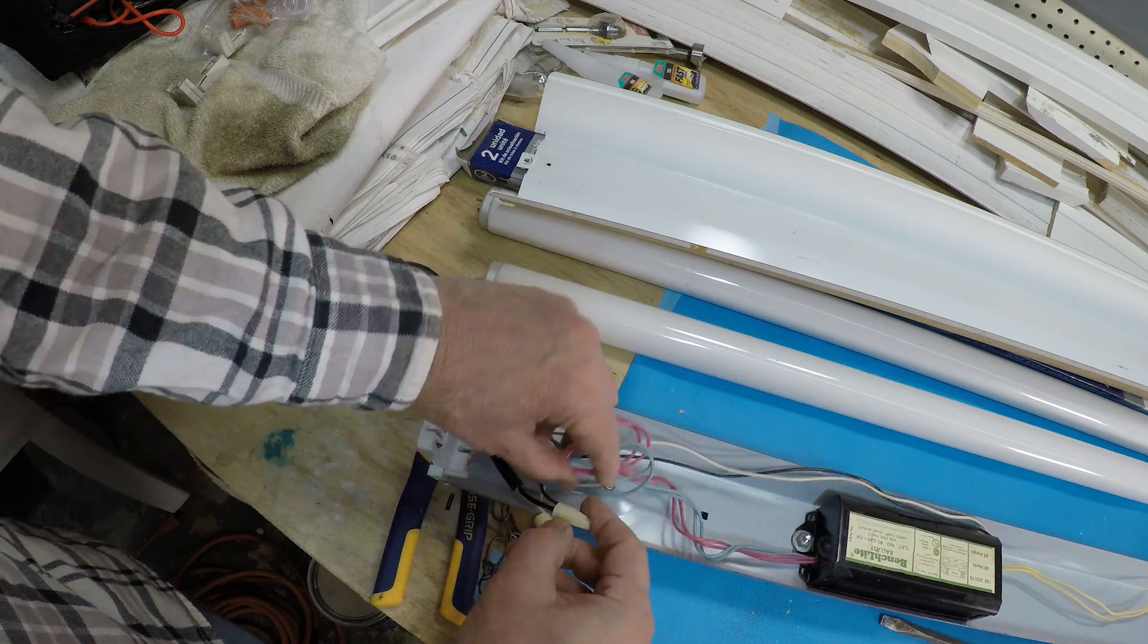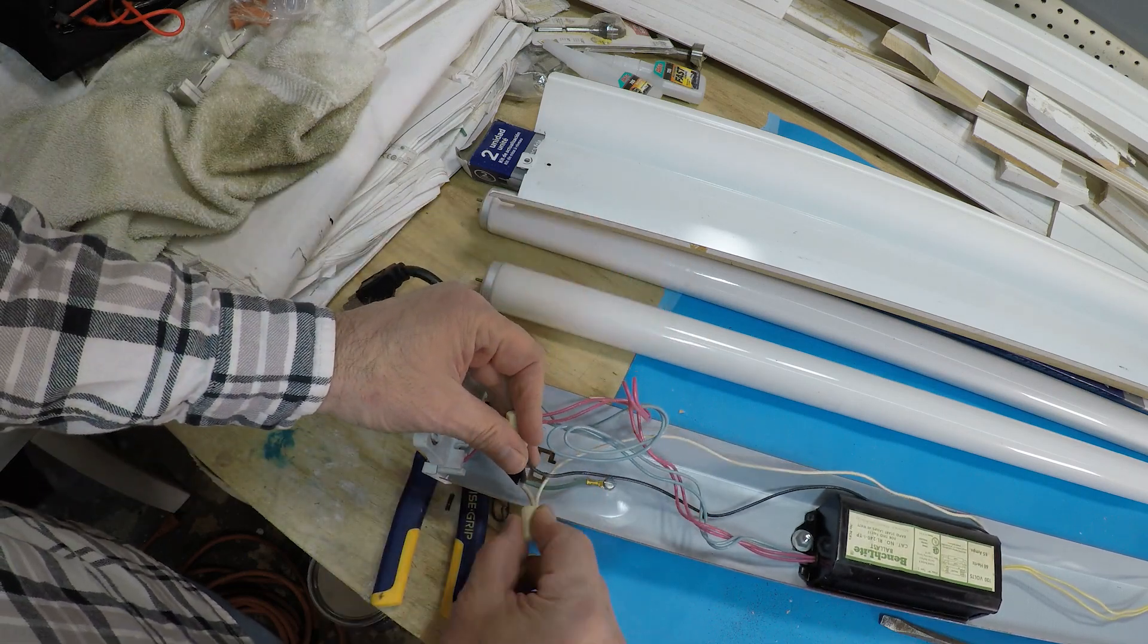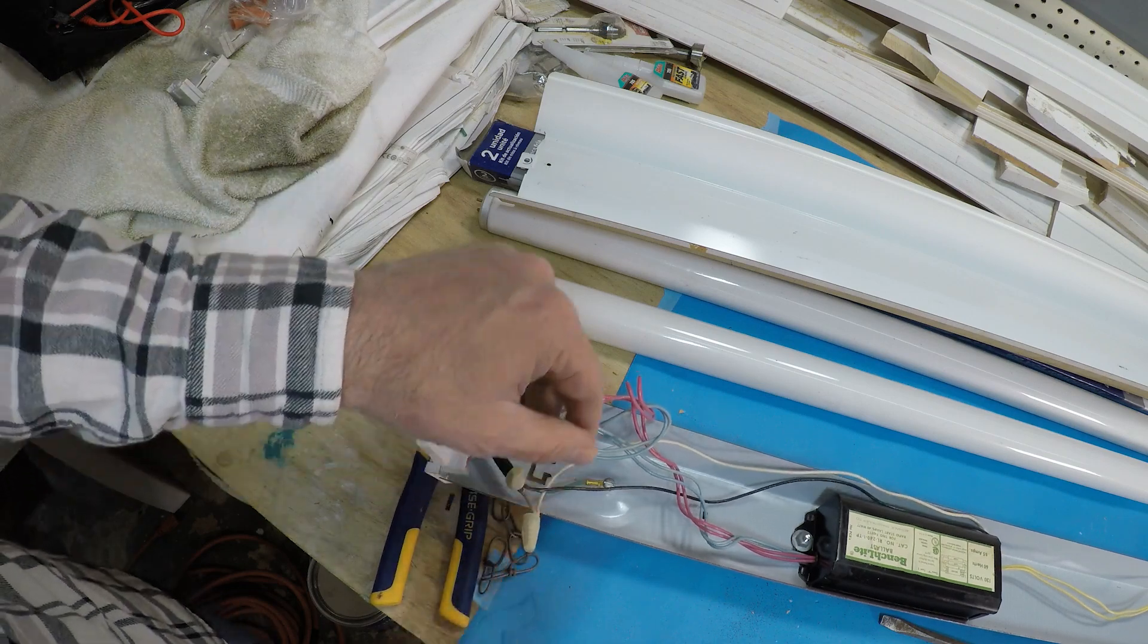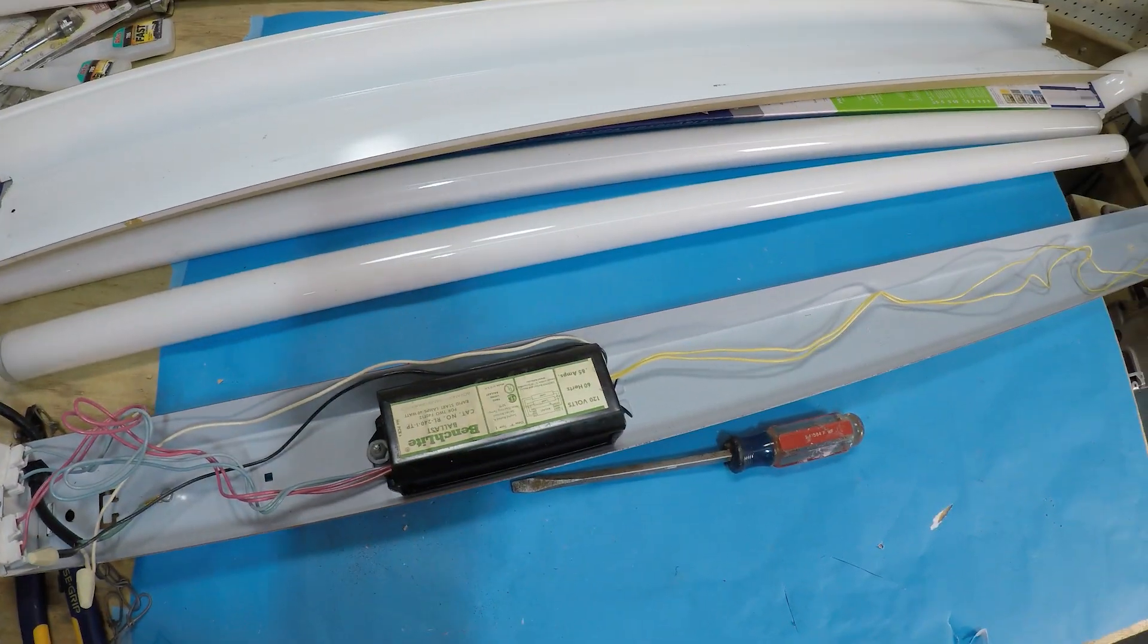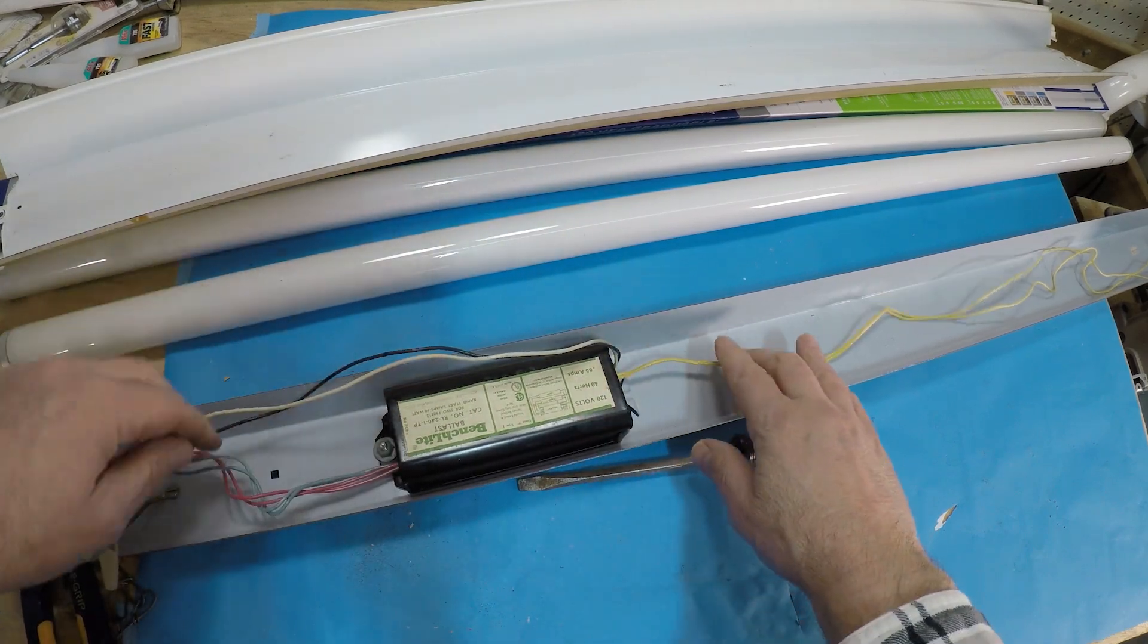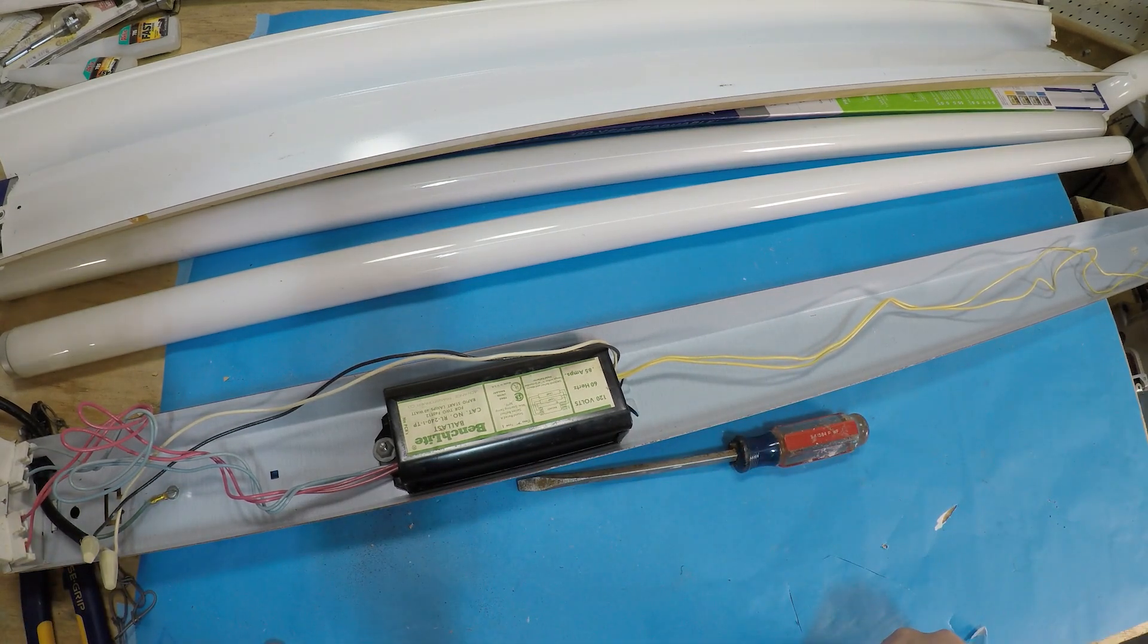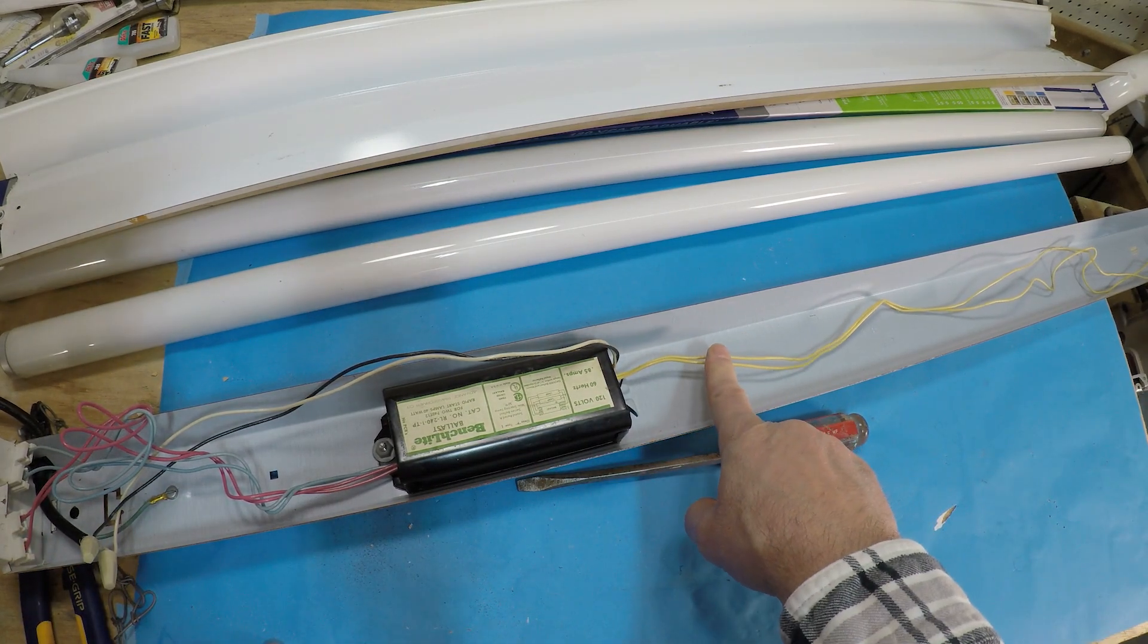And you've got your black, which is your hot, and your white, which is your neutral, going over to the one side of the ballast. And then you've got these other colors here that are going to the left side and the right side, which we're going to cut these off as well.